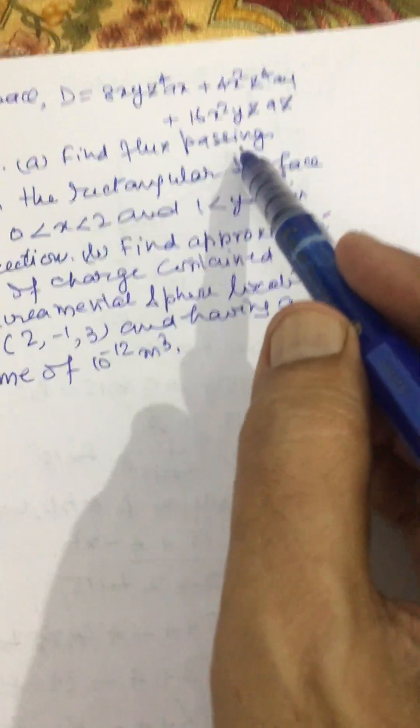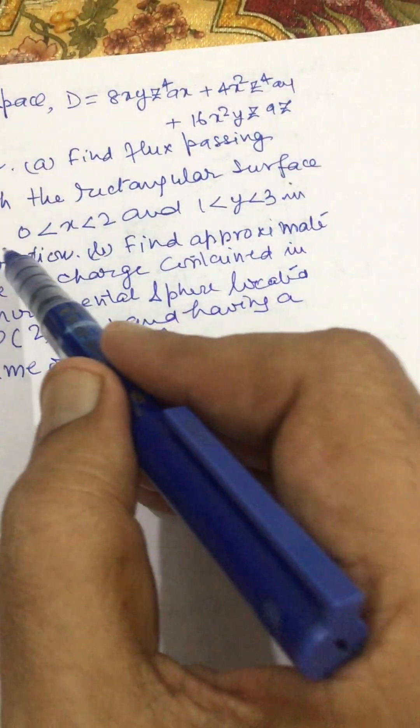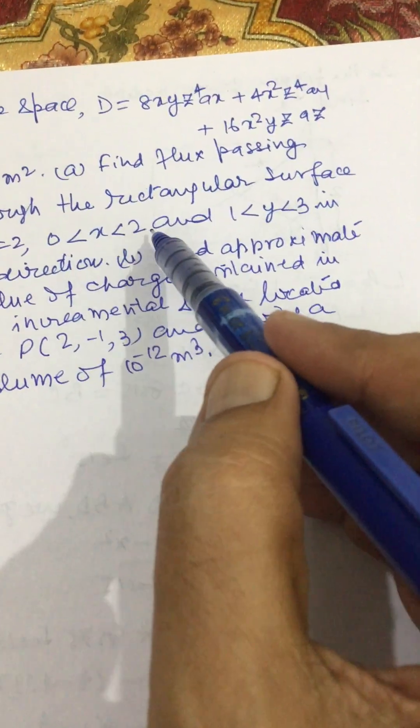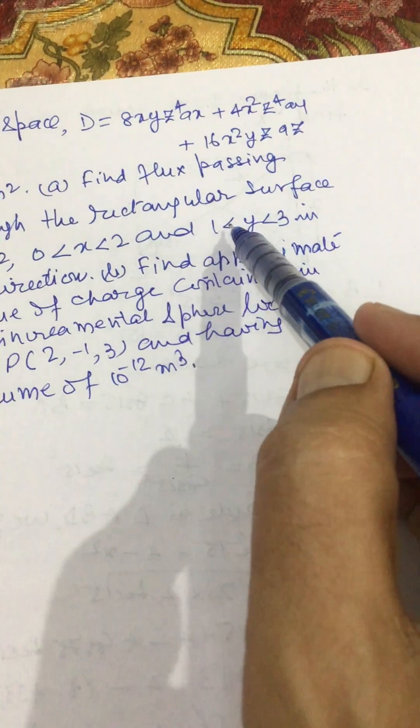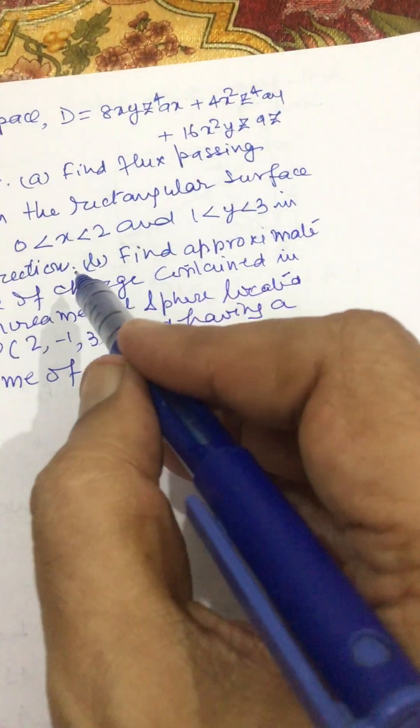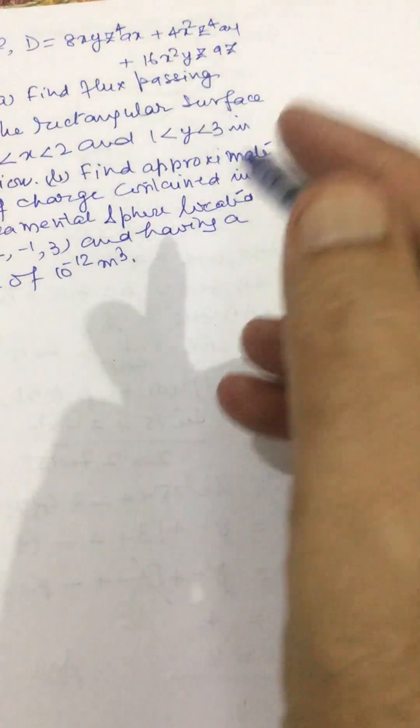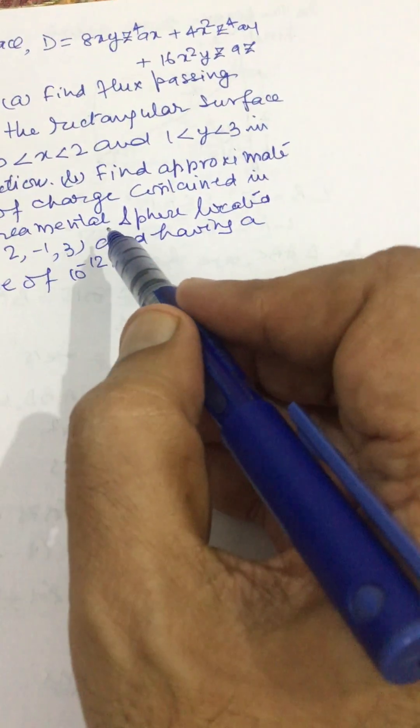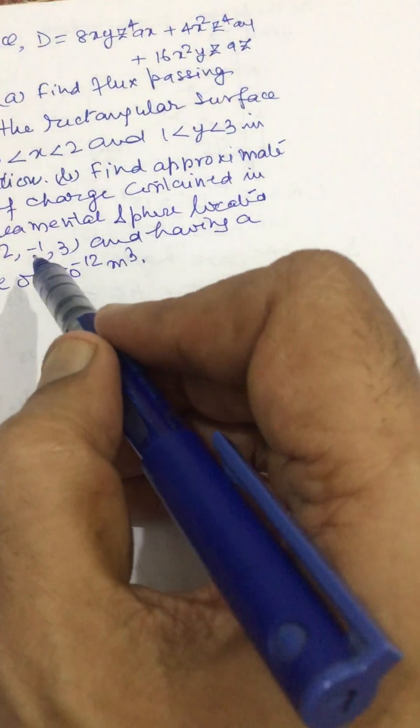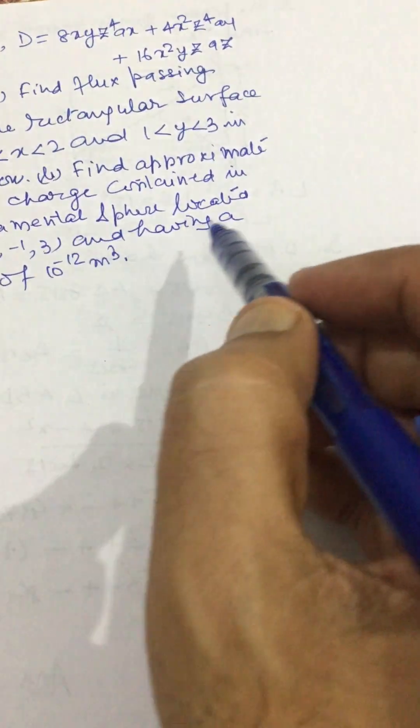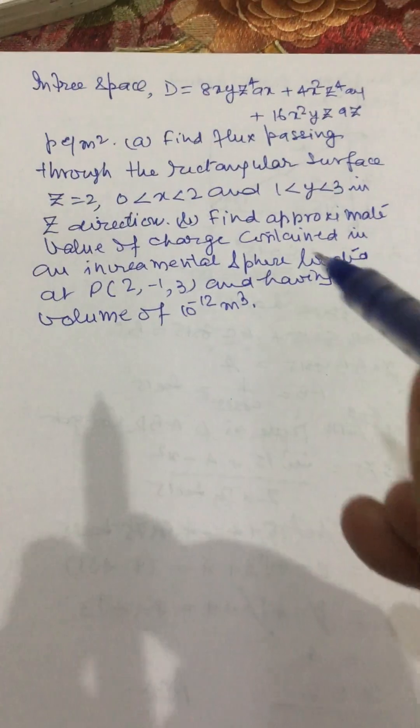Find flux passing through the rectangular surface z equals 2, 0 less than x less than 2, and 1 less than y less than 3 in the z direction. And part b is find approximate value of charge contained in an incremental sphere located at point P(2, -1, 3) and having a volume of 10^-12 meter cube.